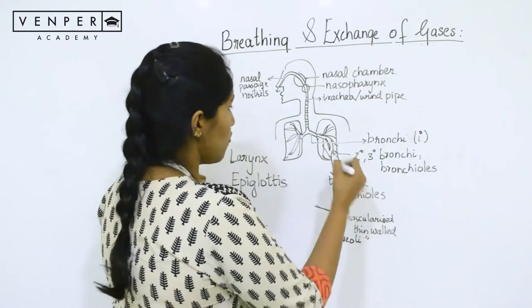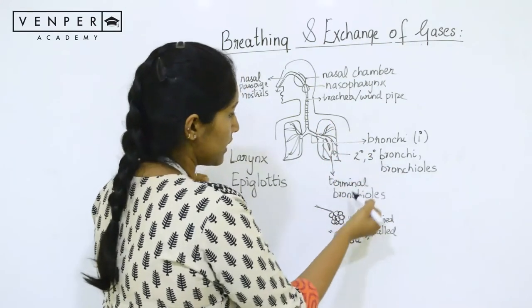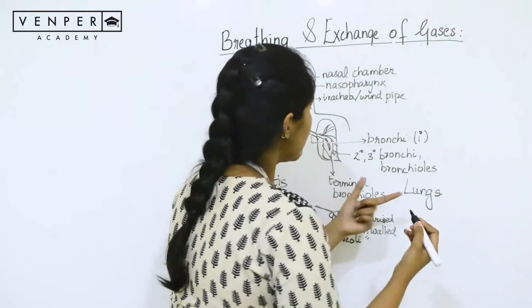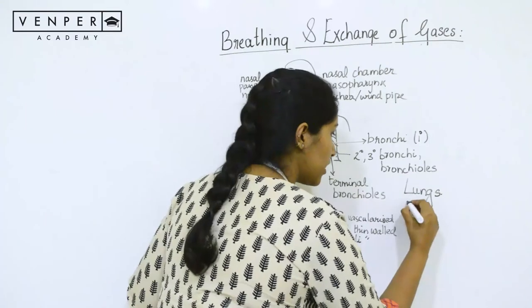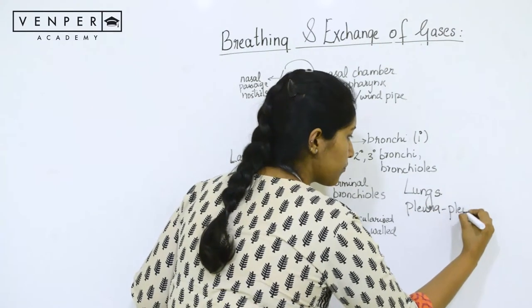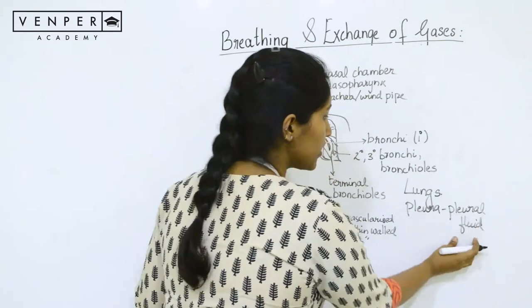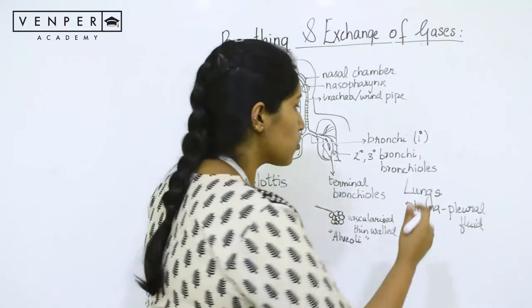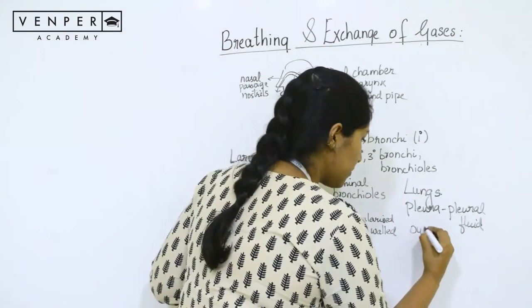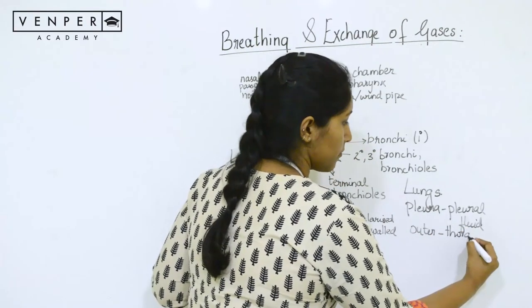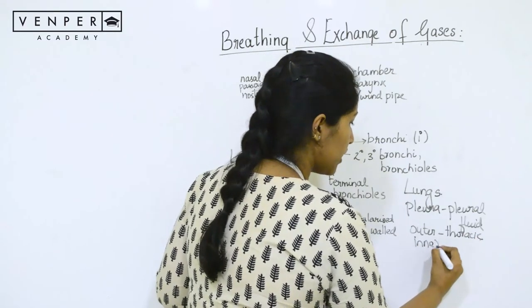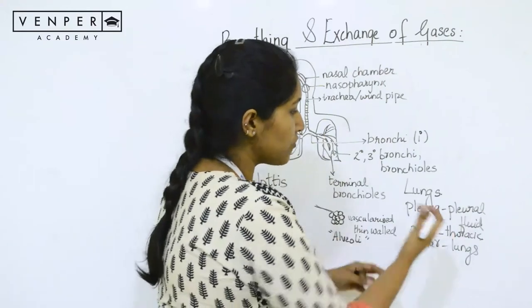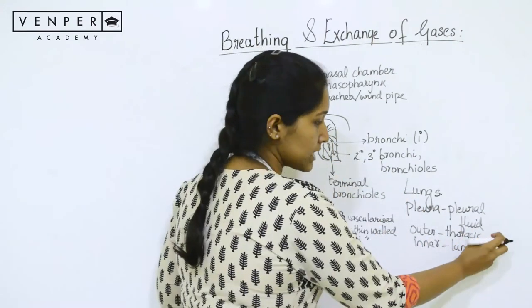The bronchi, bronchioles, terminal bronchioles, and alveoli together form the lungs. The lung is encased in a double-layered membrane called the pleura, which has pleural fluid. The pleural fluid prevents friction as the lung expands and contracts. The outer membrane is in contact with the thoracic lining, while the inner membrane is in contact with the lungs. Between these two linings is the pleural fluid.